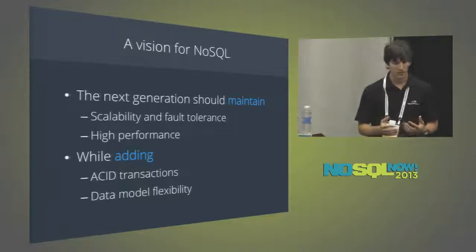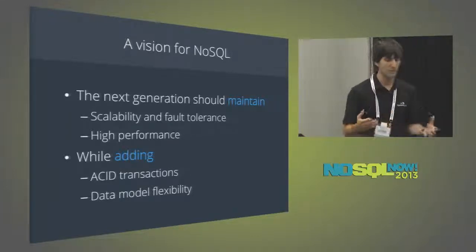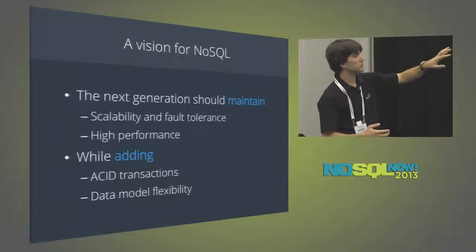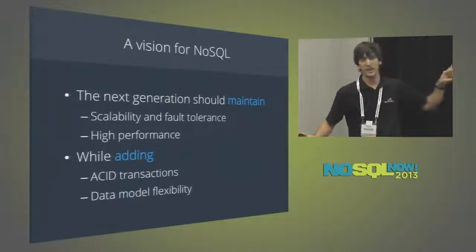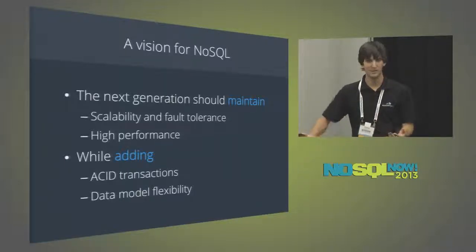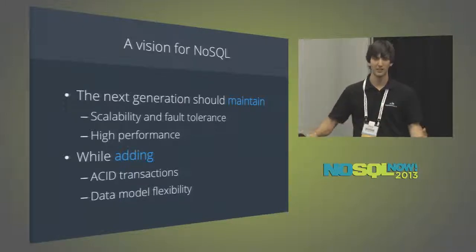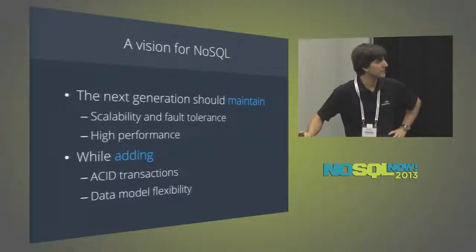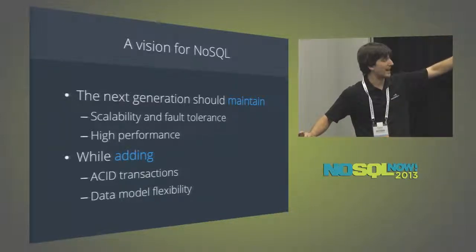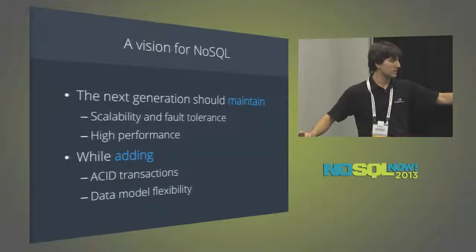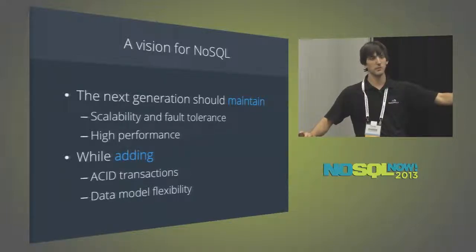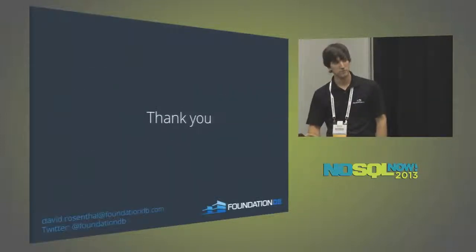This brings me to the conclusion. The next generation of NoSQL should maintain the scalability and fault tolerance that the first generation was founded on, and maintain high performance — because without performance, this is all an academic exercise. But the vision is that we can maintain all of that while adding ACID transactions and all the benefits that come from that, one of the biggest being the ability to build abstractions and have true data model flexibility. Thank you very much.